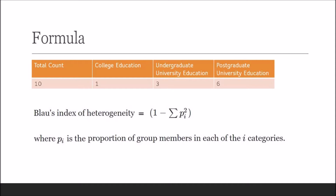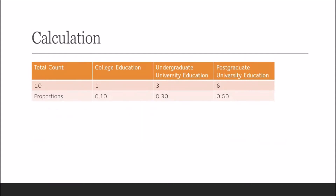Now calculate the proportions. The proportions are 0.10, 0.30, and 0.60 — meaning one is 10 percent of 10, three is 30 percent of 10, and six is 60 percent of 10. The total count is 10, which is 100 percent. Now take the square of the proportions.